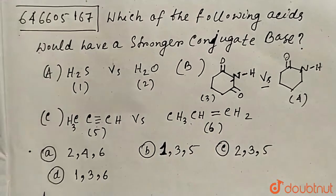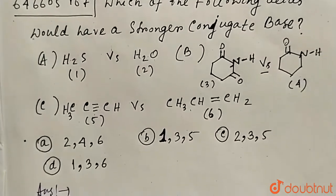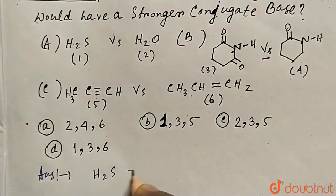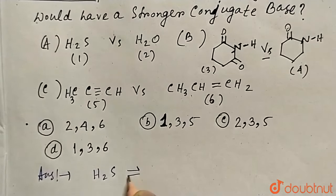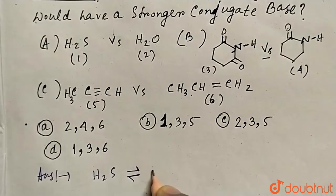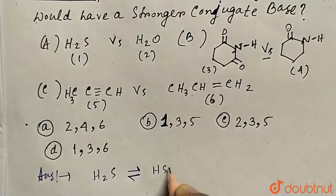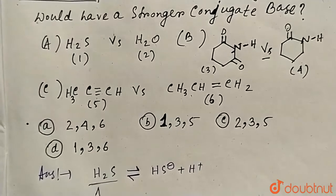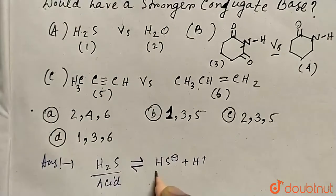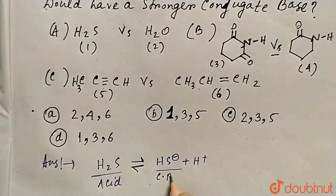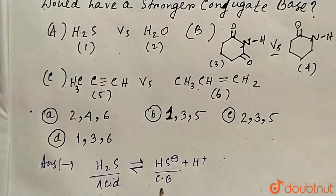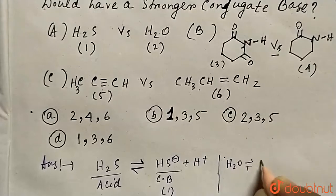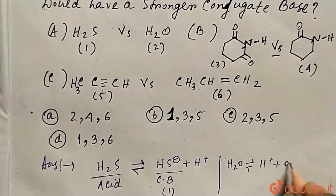Let's start with pair A: H₂S and H₂O. Conjugate base means when H₂S loses a proton in equilibrium, the anion formed is the conjugate base. H₂S dissociates as HS⁻ plus H⁺, so HS⁻ is the conjugate base of compound one. If H₂O dissociates, it gives H⁺ and OH⁻, so OH⁻ is the conjugate base of compound two.